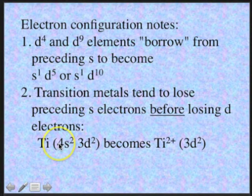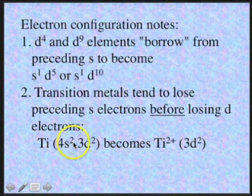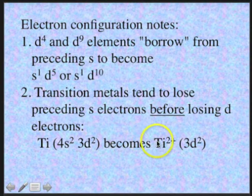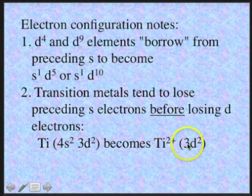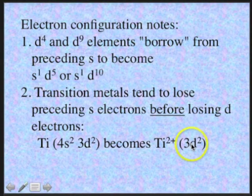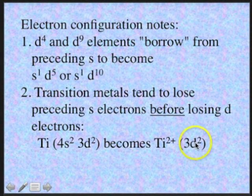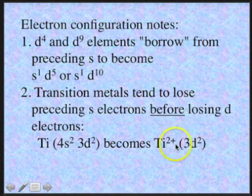So if you have titanium metal — 4s2, 3d2 — and it becomes the titanium 2+ ion, it's going to lose the 4s2. So the final configuration would end as 3d2 for Ti2+.